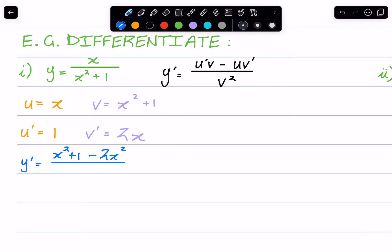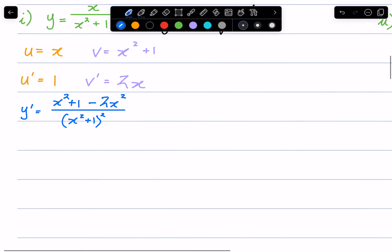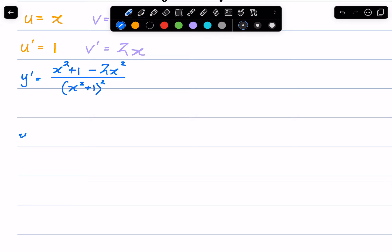The numerator can be simplified. So y' gives us x² - 2x², which is x² minus 2x² gives us 1 - x².